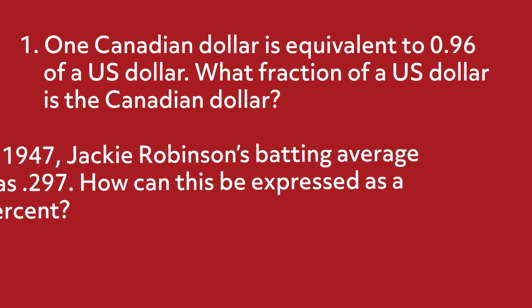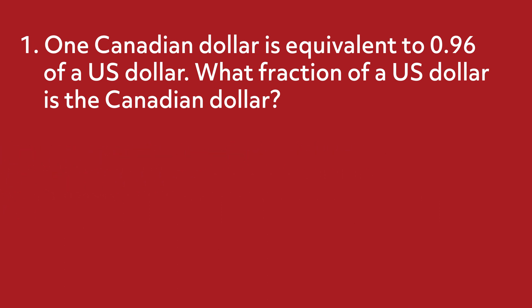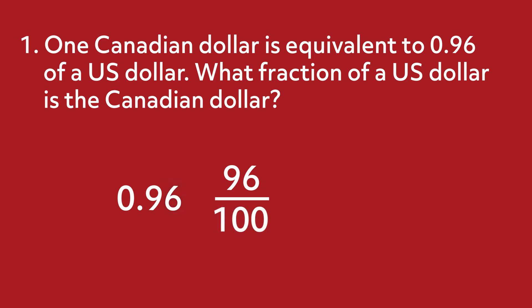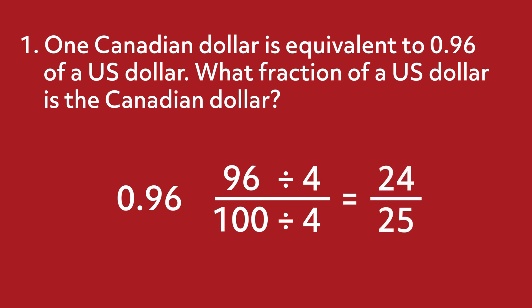Now that you've tried these problems, let's go over them together. 1 Canadian dollar is equivalent to 0.96 of a US dollar. What fraction of a US dollar is the Canadian dollar? To convert the decimal 0.96 into a fraction, start by writing the numbers after the decimal point, 96, as the numerator. Next, look at the place value of the last digit, which is 6. Since 6 is in the hundredths place, the denominator is 100. Therefore, the decimal fraction is 96 over 100. Since 96 and 100 share a common factor of 4, we can simplify by dividing both the numerator and denominator by 4. 96 divided by 4 over 100 divided by 4 equals 24 over 25.